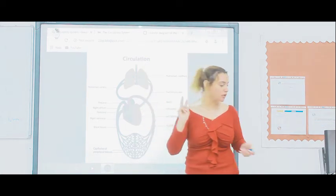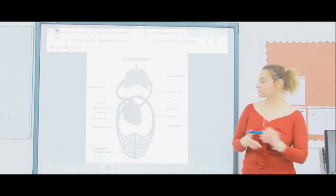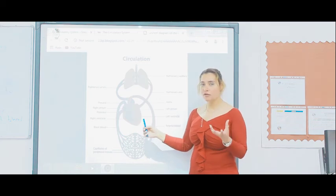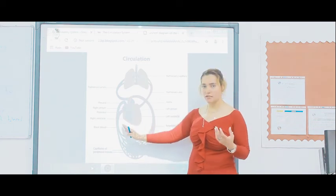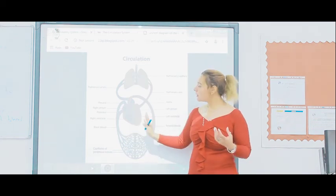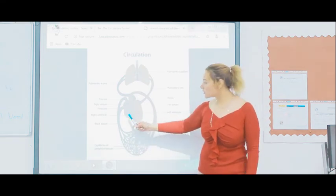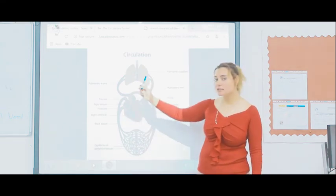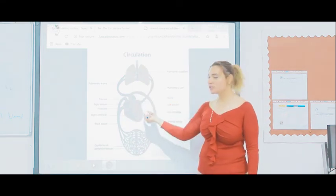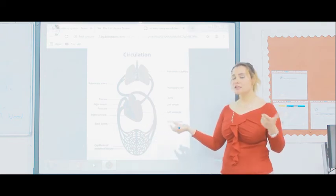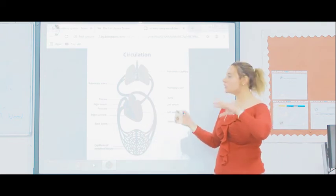Two more notes. First, you will notice that the walls of the left ventricle are very thick. Why are they thicker than the other part? Because the right side only pumps blood to the lungs, but the left side pumps blood to the entire body — that's why it needs to be stronger and thicker.